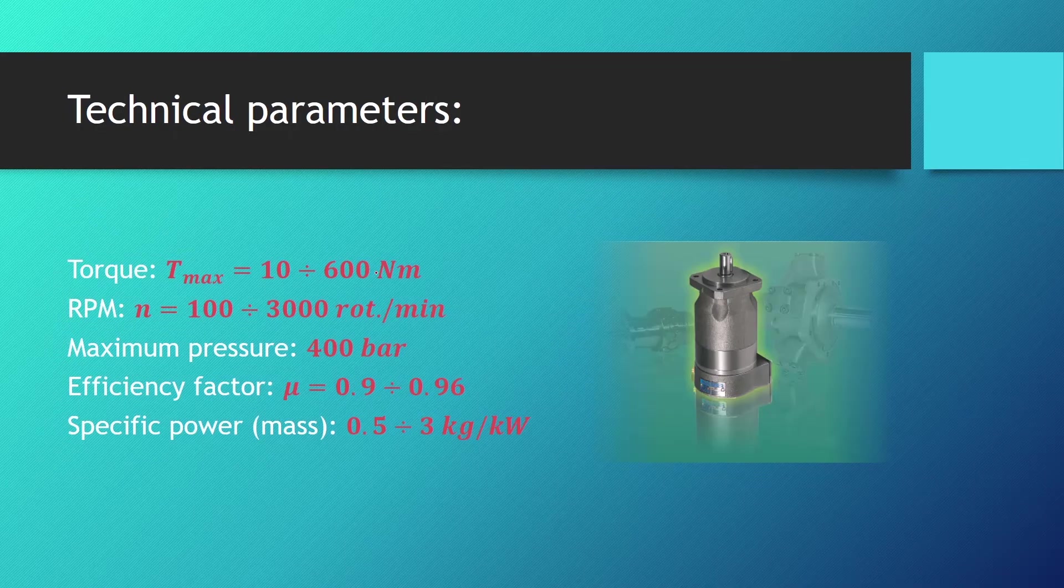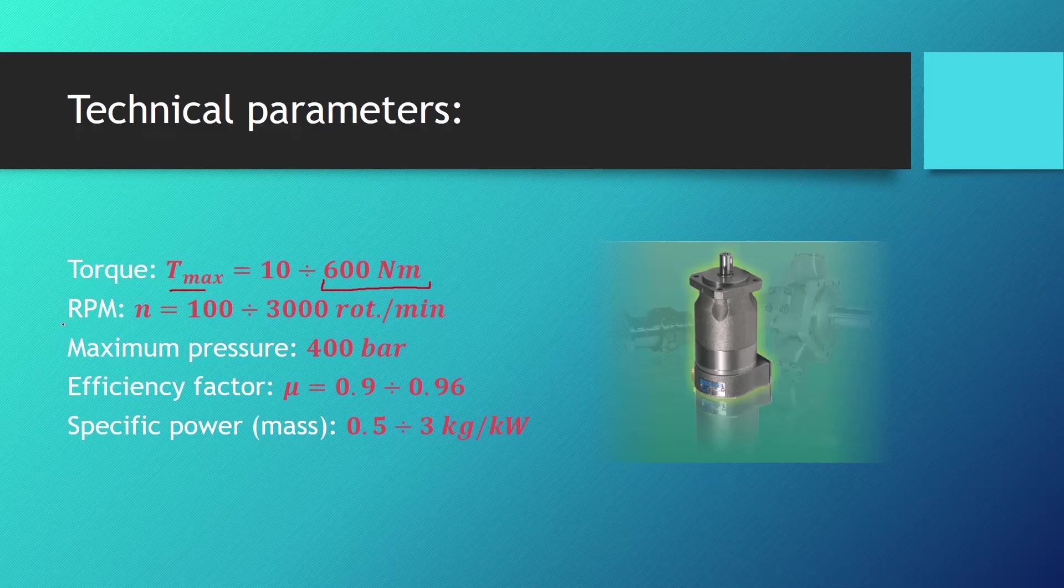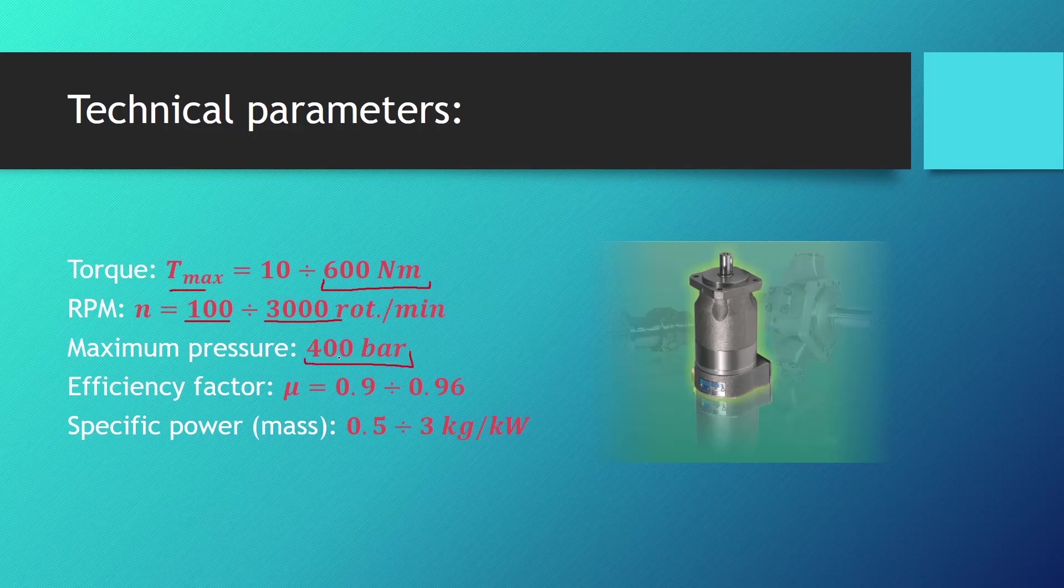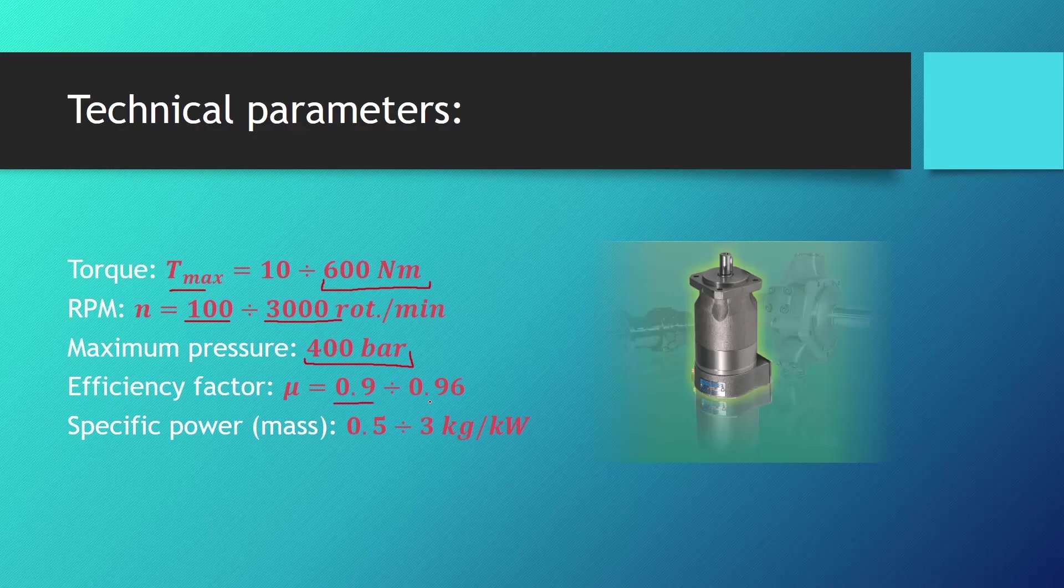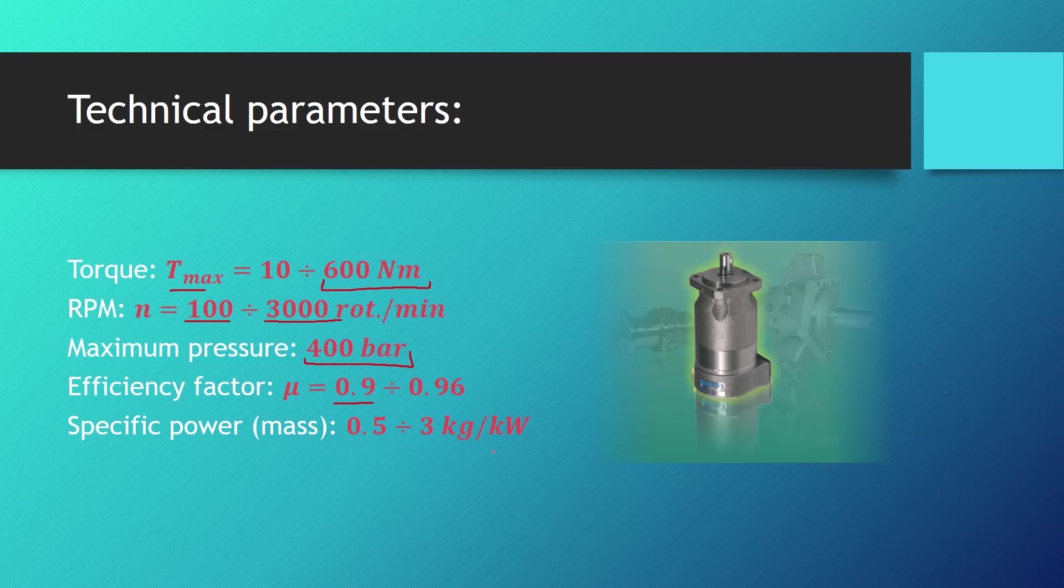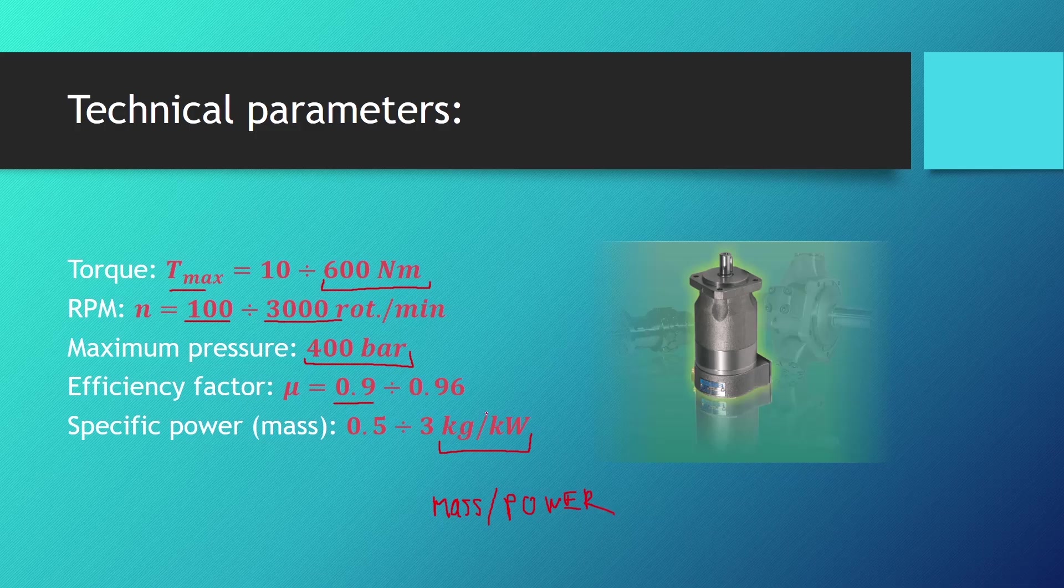These are rough estimates of technical parameters for these kinds of motors. The maximum torque is around 600 newton meters. The speed at which they operate is from 100 to 3000 rotations per minute. The maximum pressure at which these motors work is around 400 bars. The efficiency factor for these units is from 0.9 to 0.96, and the specific power or specific mass is from 0.5 to 3 kilograms per kilowatt. This is just the mass divided by the power.